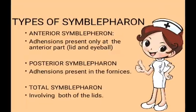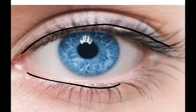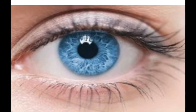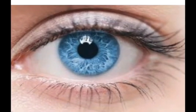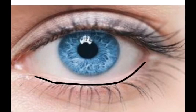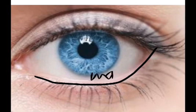Next are the types of symblepharon. There are three types. Anterior symblepharon: the adhesion is present only at the anterior part, which includes the lid and the eyeball. The lids are the upper lid and the lower lid. In anterior symblepharon, the sticking takes place between the lid and the eyeball — anywhere sticking can take place is considered to be anterior symblepharon.